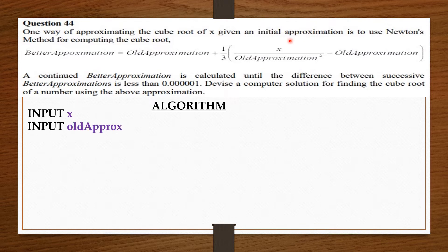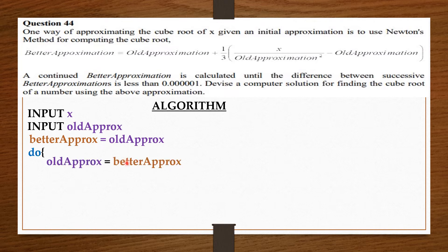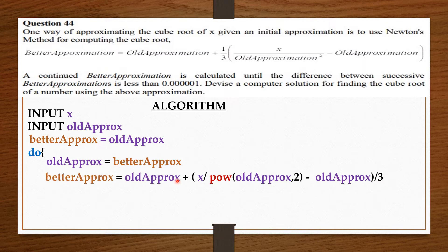Then we receive a copy of the oldApprox in betterApprox. Then from there, we are going to do our computation. So we say do oldApprox equals betterApprox. BetterApprox equals oldApprox plus x over oldApprox to the power 2 minus oldApprox all on 3. Remember the formula.